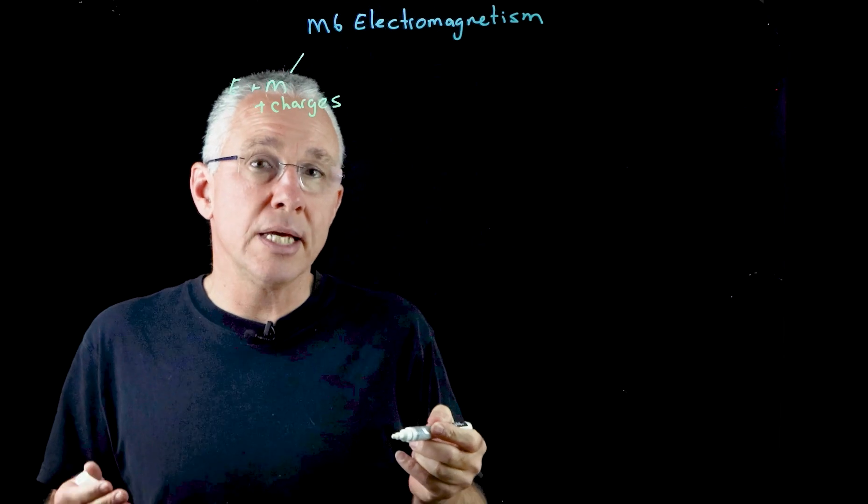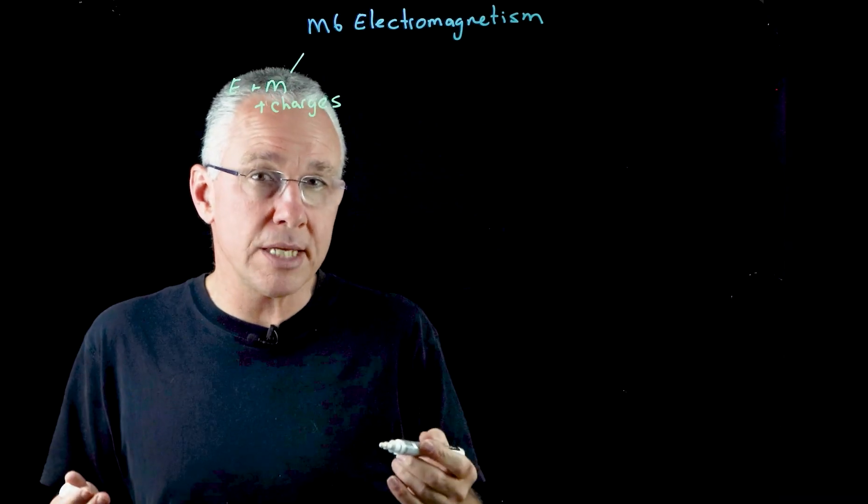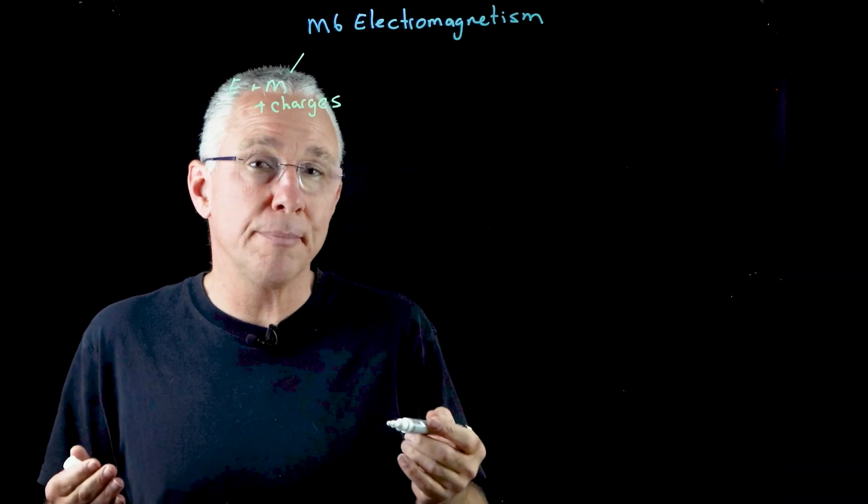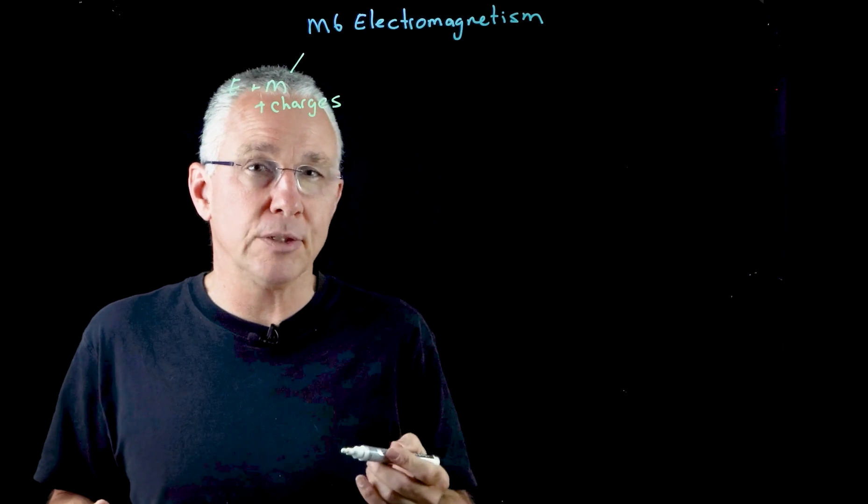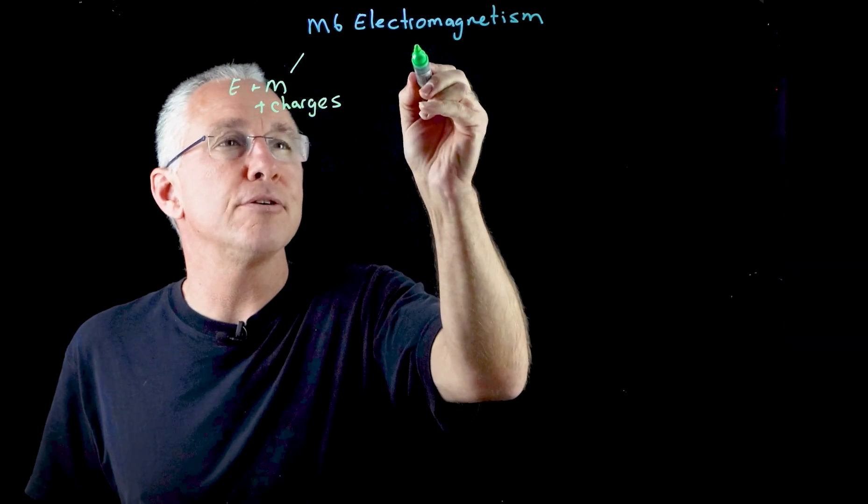The next inquiry question basically says, under what circumstances is a force produced on a current bearing conductor in a magnetic field. In essence, it's the motor effect.